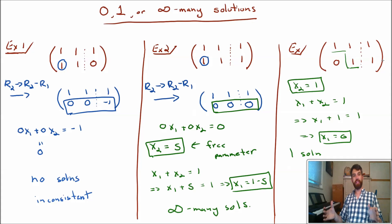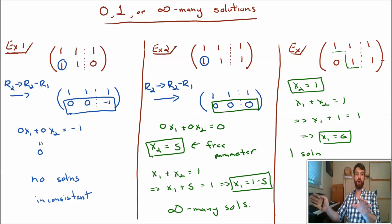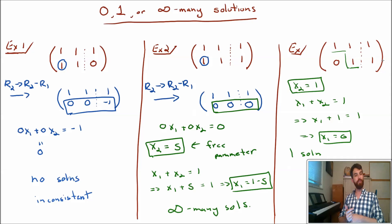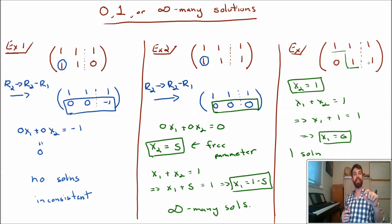The key difference between these three examples comes down to what the bottom rows look like after row operations into upper triangular form. In the first, it was all zeros in the coefficients but a non-zero constant — a contradiction giving no solutions. In the second, it was all zeros in both coefficients and constant — giving freedom and infinitely many solutions. In the third, there was a non-zero coefficient and non-zero constant, giving a unique solution. It all comes down to: is there a contradiction, a freedom, or a unique solution?